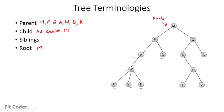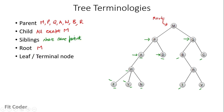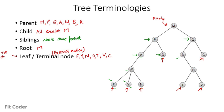The next term is siblings — nodes which belong to the same parent are called siblings. In this diagram, nodes P and Q both have the same parent M, so they are siblings. Similarly, A and D are siblings, B and C are siblings, T and V are siblings, and F and Y are siblings. Then we have leaf nodes, also called terminal nodes — these are the bottommost nodes in the tree. In this tree, the leaf nodes are F, Y, N, D, T, V and C. These are also known as external nodes and they do not have any children.